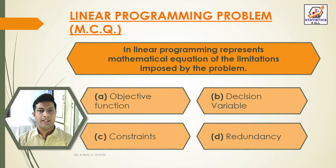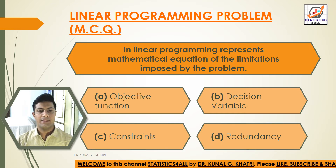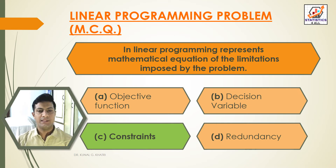Question 9: In linear programming, dash represents the mathematical equation of the limitation imposed by the problem. Option A: Objective function. Option B: Decision variable. Option C: Constraints. Option D: Redundancy. Answer: Option C — Constraints represent the mathematical equation of the limitation imposed by the problem.